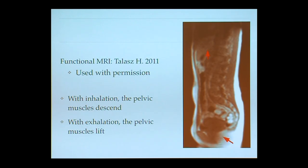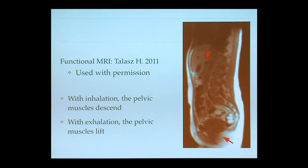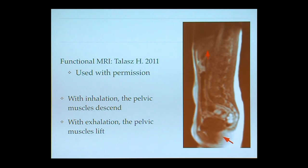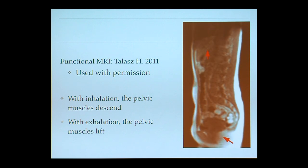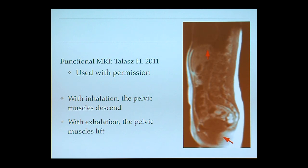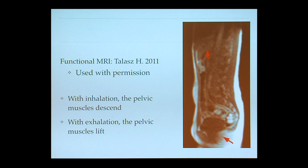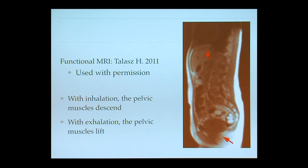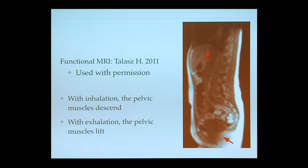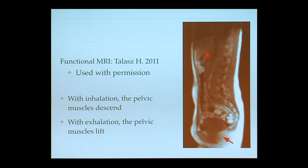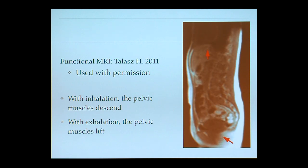Here is the video again, showing the pelvic floor on the bottom moving together with the diaphragm with breathing. With inhalation, we instruct women to breathe in through their nose, let their belly expand, and let the pelvic floor relax. As they exhale, blow out through the mouth and contract the pelvic floor — imagine closing rectally and vaginally, and imagine the muscles lifting up similar to an elevator.